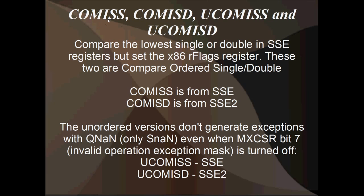So basically these are the four instructions. We've got COMISS, or compare scalar single; COMISD, which is compare scalar double; UCOMISS, which is unordered comparison of scalar singles; and UCOMISD, which is unordered comparison of scalar double. They all compare the lowest two elements from two registers. The single versions are from SSE and the double versions are from SSE2. The unordered versions have different behavior with QNAN — we'll have a look at exactly how they work a bit later.